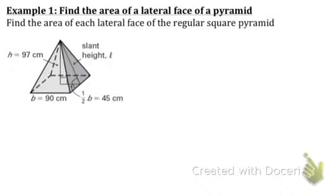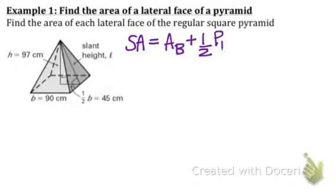Let's try an example. We are going to find the area, surface area, of this regular square pyramid. So what's our first step always? Write the formula down. Good job, kids. Surface area is equal to the area of the base plus one half the perimeter of the base times the slant height. Which is a cursive L.